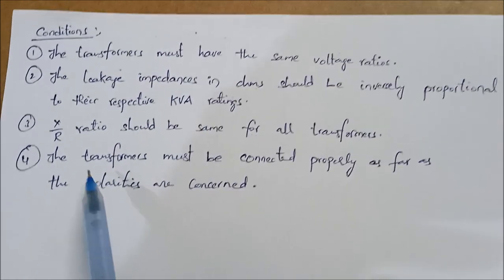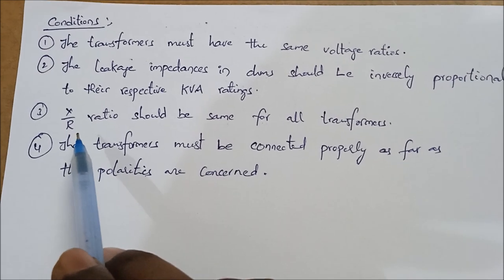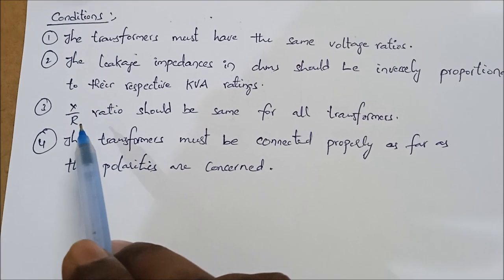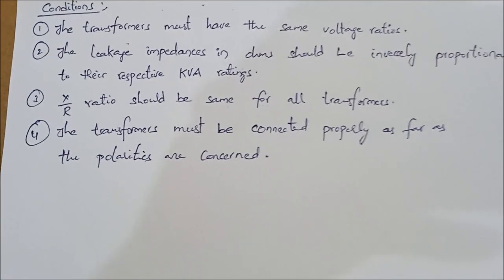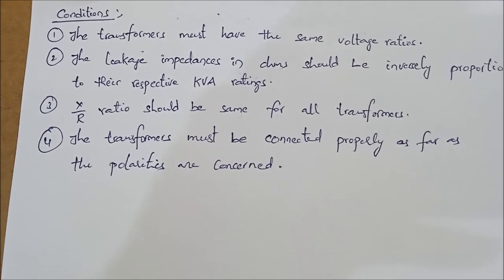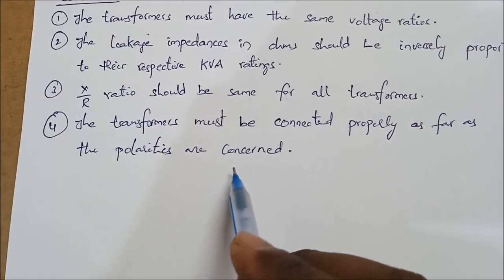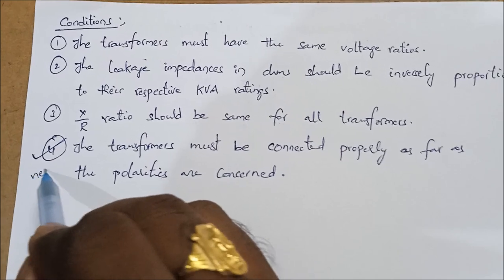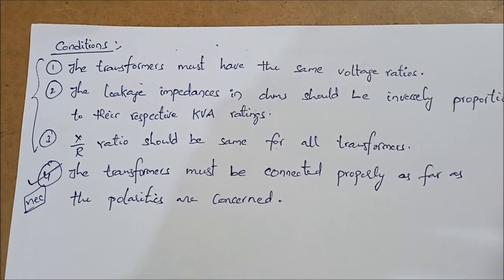We will understand the second point later. The third condition is that the X/R ratio should be the same for all transformers. In impedance ZA and ZB, X is the reactance and R is the resistance, so the X/R ratio of transformer A should equal the X/R ratio of transformer B. The fourth condition is that the transformers must be connected properly as far as polarities are concerned. The fourth point is the necessary condition, while the first three are only desirable conditions.